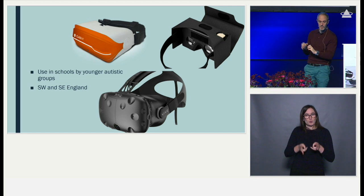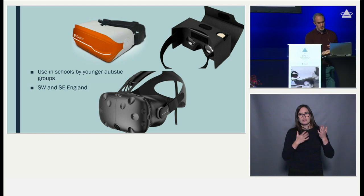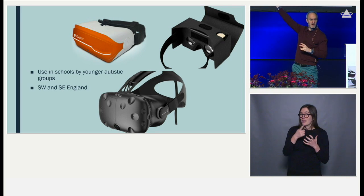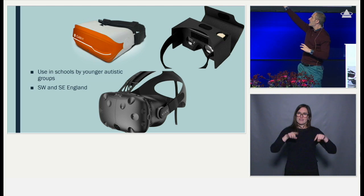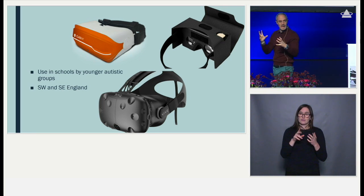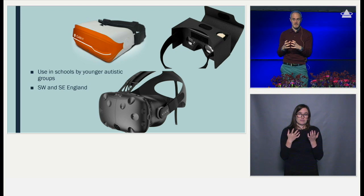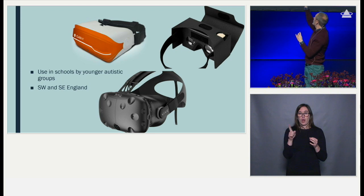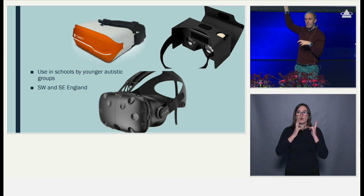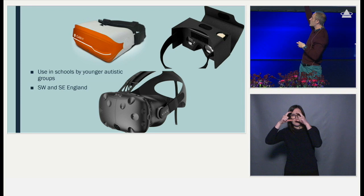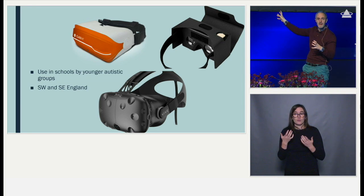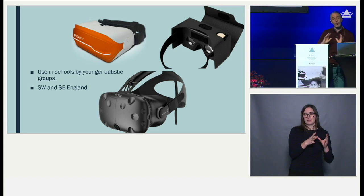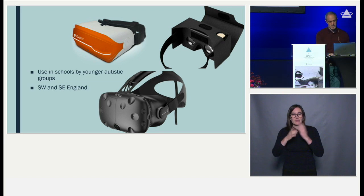You can see we used Class VR — an augmented virtual reality headset supposedly made for educational settings, standalone with no wires. We also used Google Cardboard, which is very cheap and inexpensive, and the top-of-the-range HTC Vive entertainment gaming virtual reality device. We took all of those into schools to work with teachers and autistic individuals.